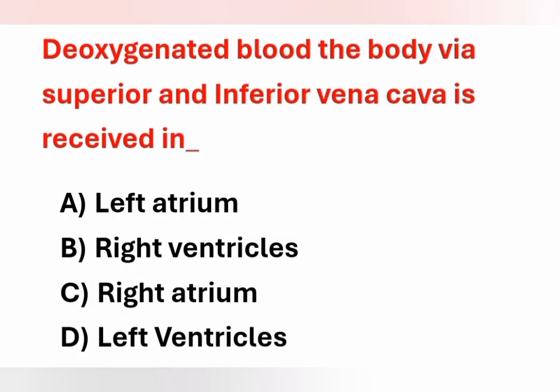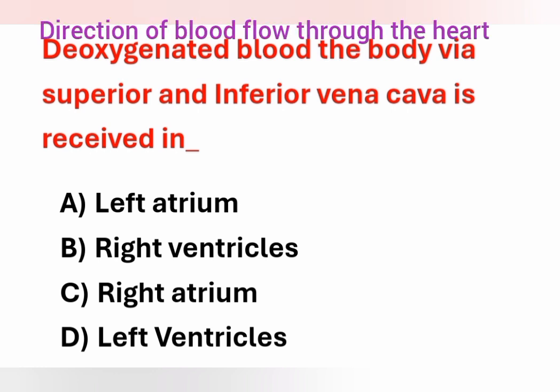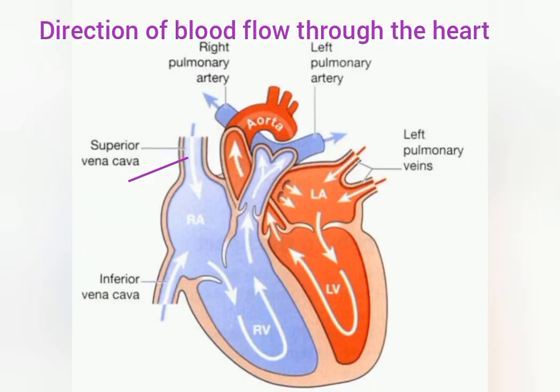Next question: deoxygenated blood from the body via the superior and inferior vena cava is received in? Options: A) Left atrium, B) Right ventricle, C) Right atrium, D) Left ventricle. Deoxygenated blood from the body through the superior and inferior vena cava comes to the right atrium. Option C is the correct answer.